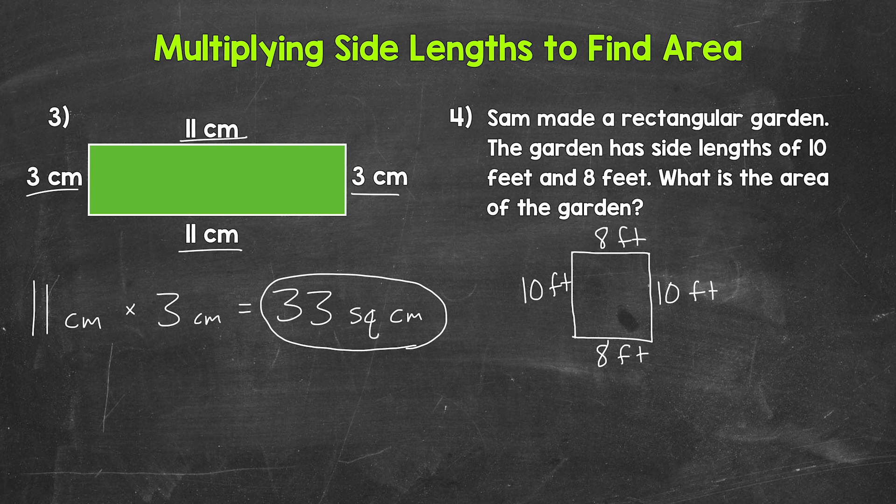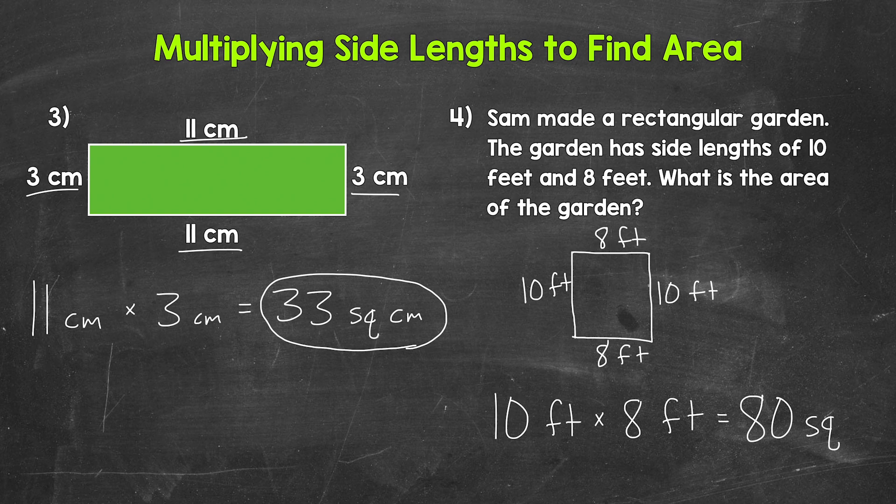So now let's find the area. We need to do 10 feet times eight feet or eight feet times 10 feet. So let's do 10 feet times eight feet. 10 times eight gives us 80. And this is square feet. So let's use the abbreviations here. So SQ for square and then FT for feet. That is the area of Sam's garden, 80 square feet. Now we can also do eight feet times 10 feet. That will give us the correct area as well.